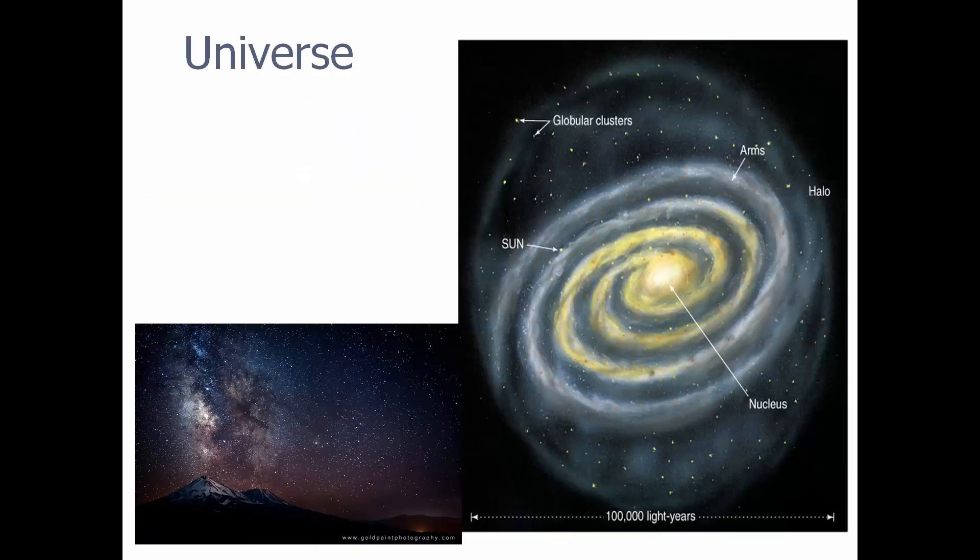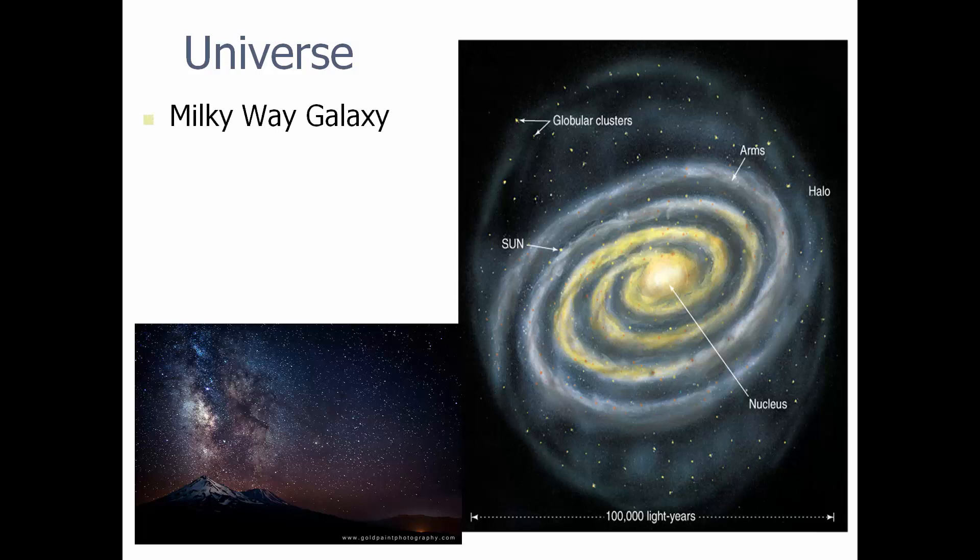We're going to start off with the universe. Universe forms around 14 billion years ago. Soon after that we started getting subatomic particles, then atomic particles, gas clouds and galaxies. Eventually we ended up with the Milky Way galaxy, which is what this is. Milky Way galaxy is our home. We think of the sun as about two-thirds of the way out. We have a halo around us which has lots of stars. It has about 200 billion stars in the Milky Way.